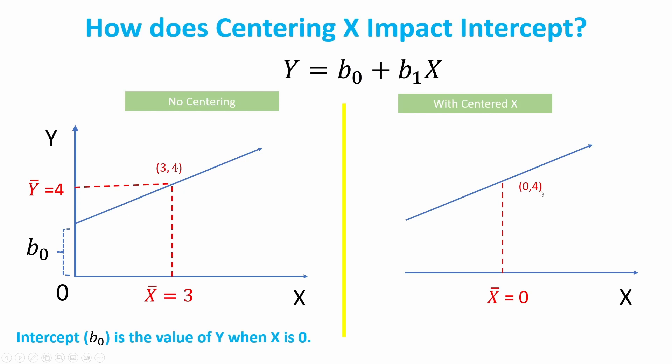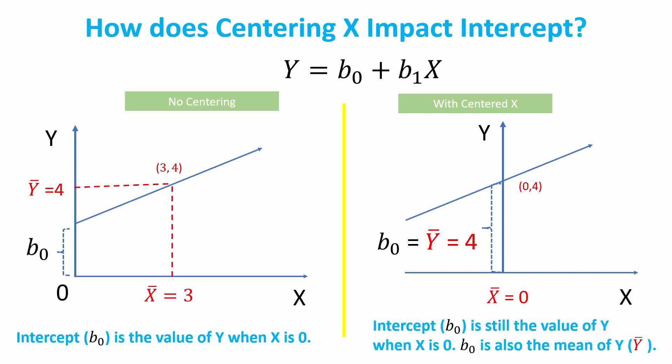Since the point where x equals zero is here, the y-axis will move to here. The intercept now becomes the mean of y. It has additional meaning: the intercept b0 is still the value of y when x is zero, and on top of that, after centering x, b0 is also the mean of y.